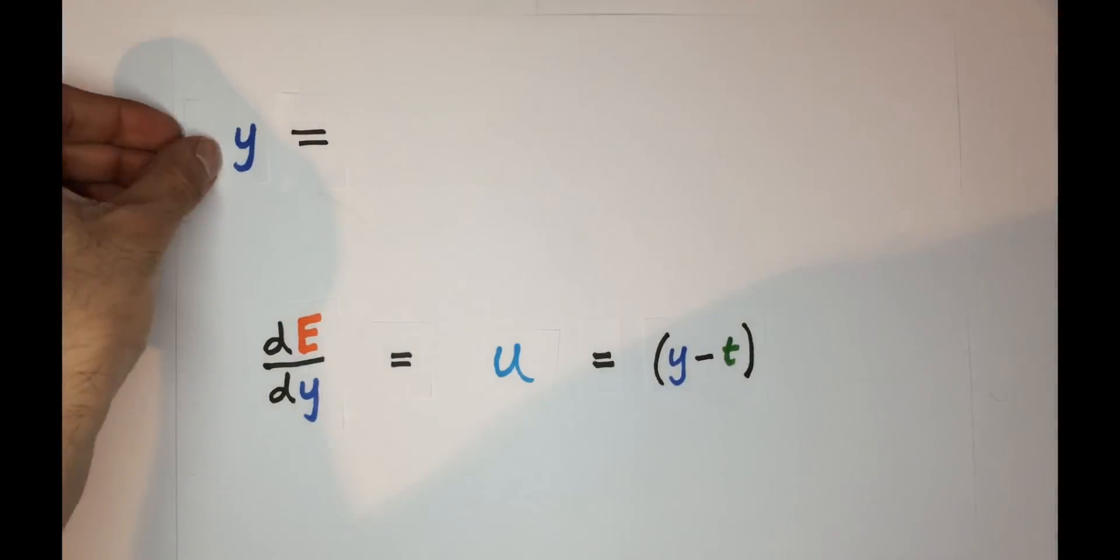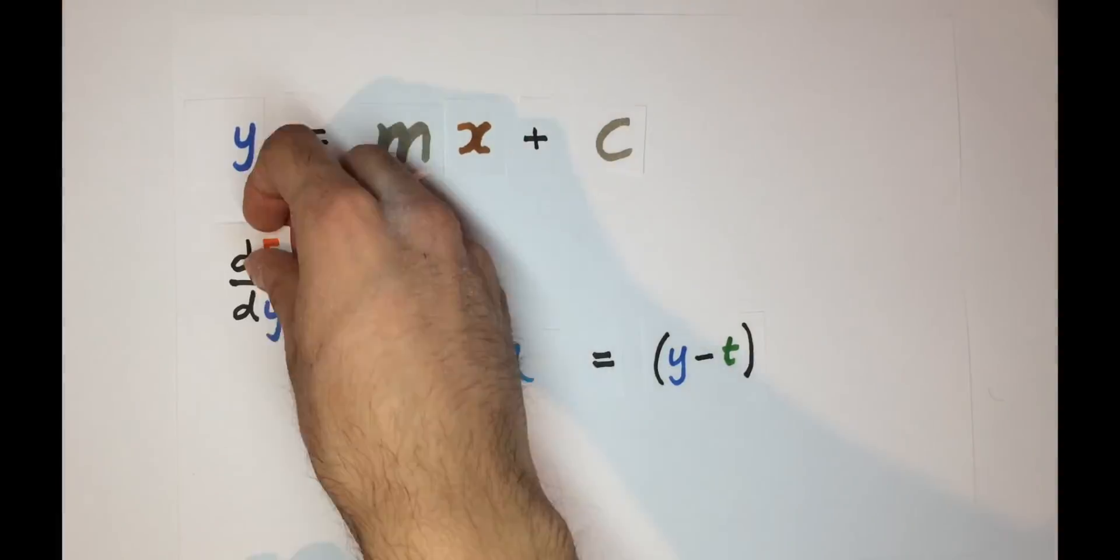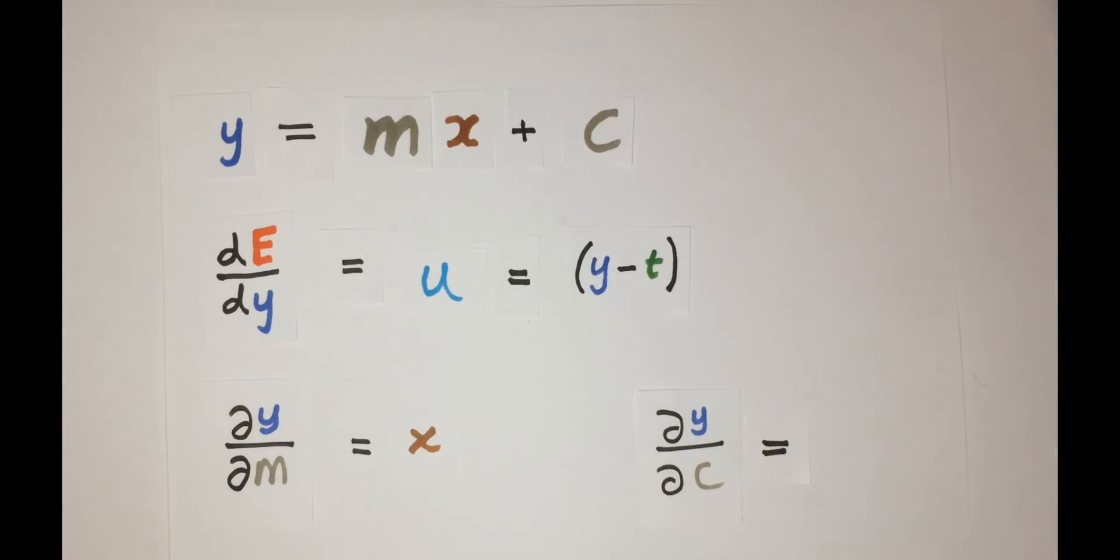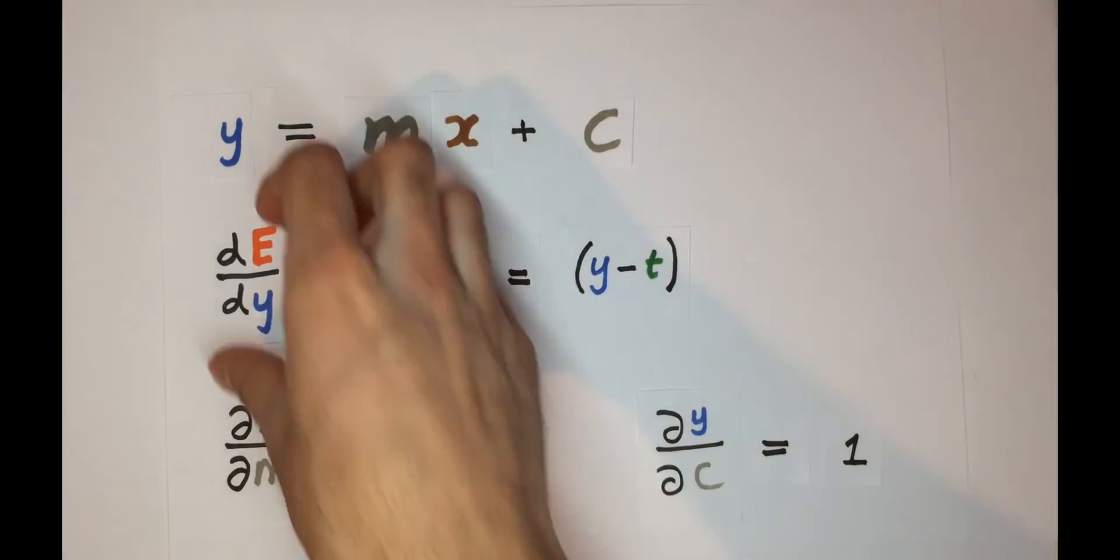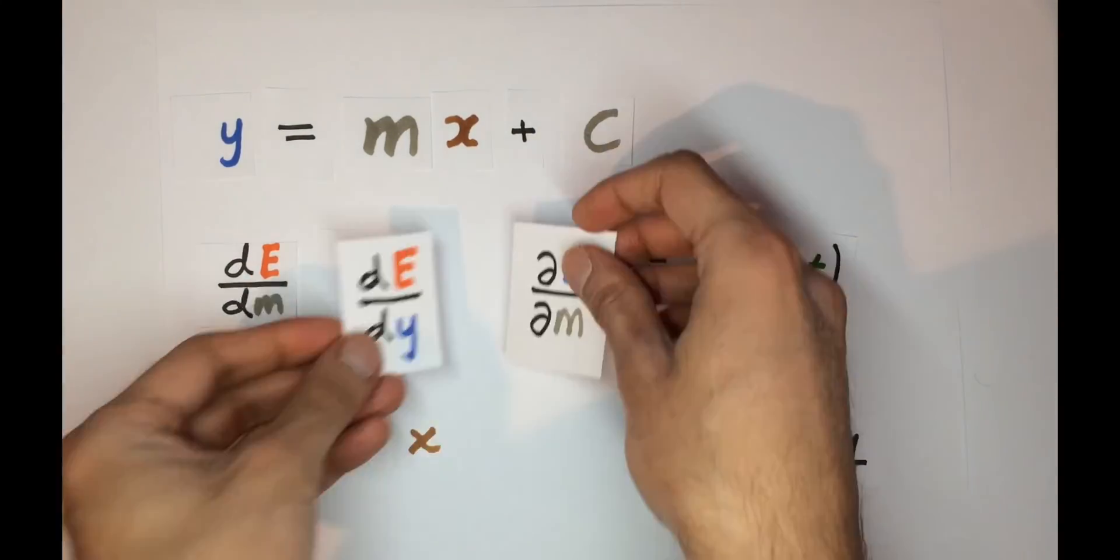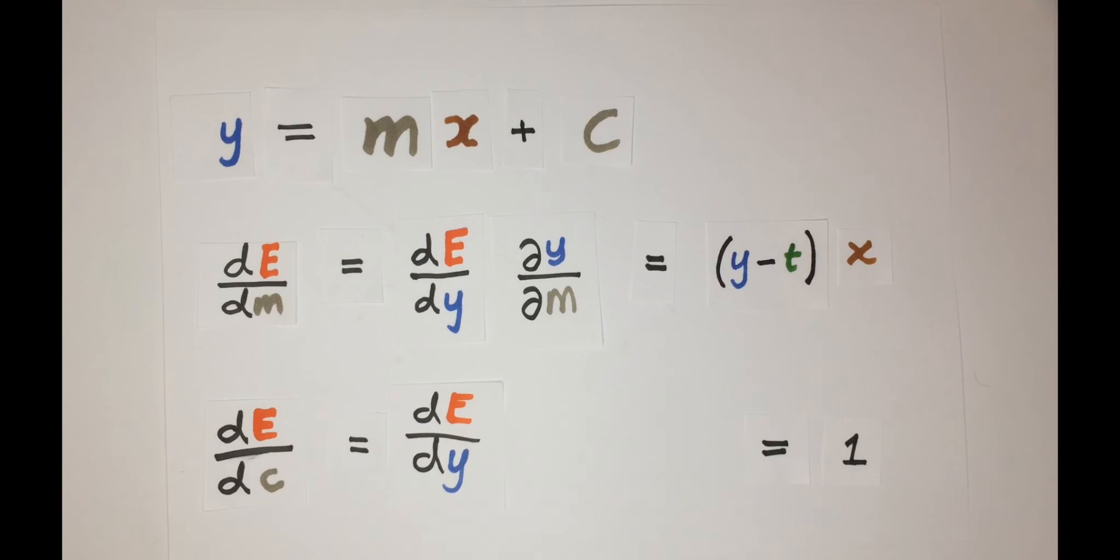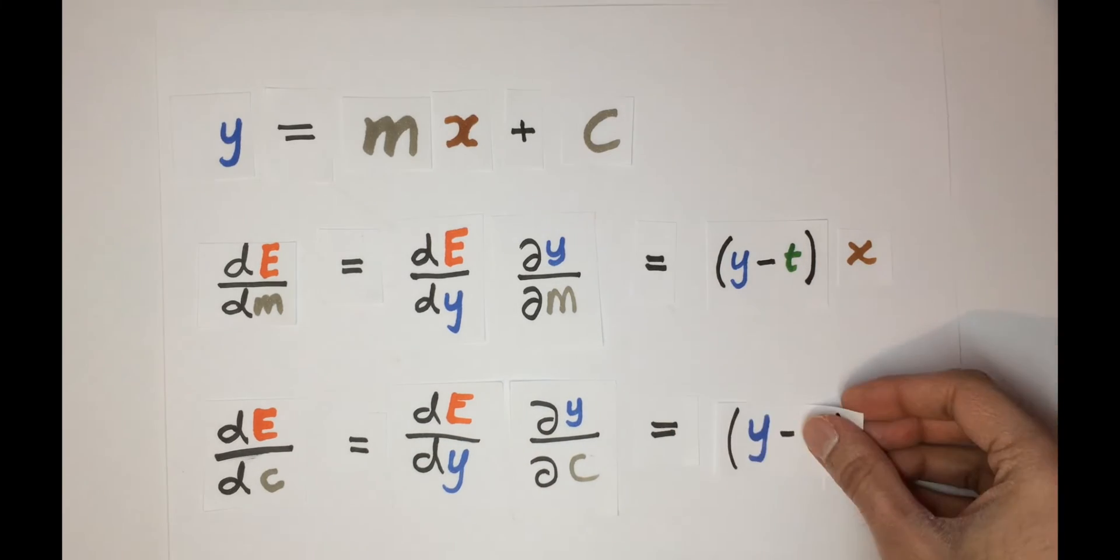Now finding dy on dm is easy. Assuming all of the terms are constant, this is just the x multiplying the m. We can also get dy on dc as just 1 since it's a constant. Finally, we get de on dm is equal to y minus t times x, and de on dc is just equal to y minus t.